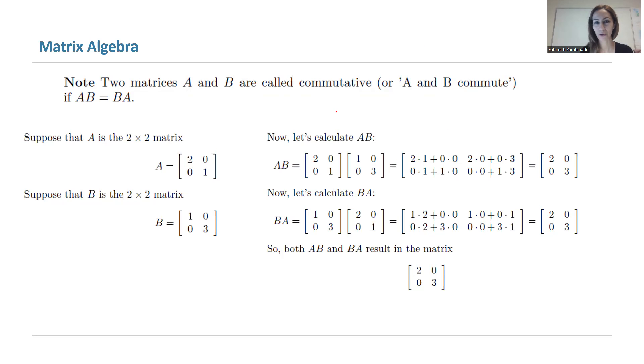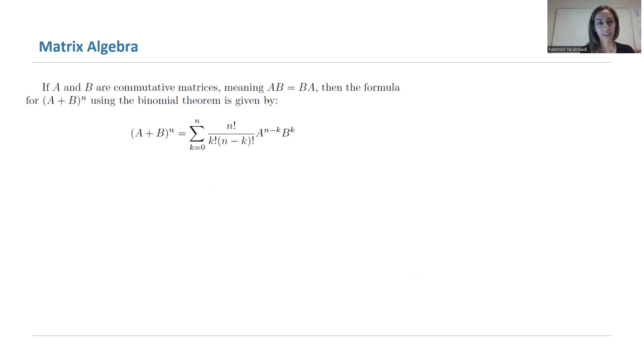Now that we've introduced the topic of commutative matrices, you're interested in knowing what their application is. If you have two commutative matrices like A and B, the binomial theorem says you can add these two matrices together and raise it to power n.